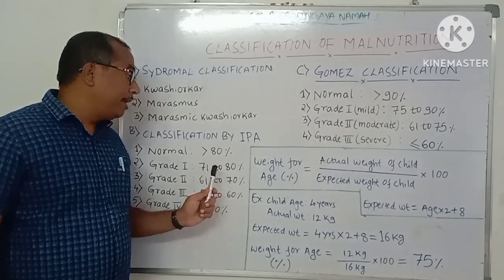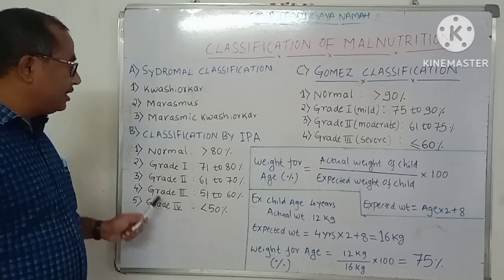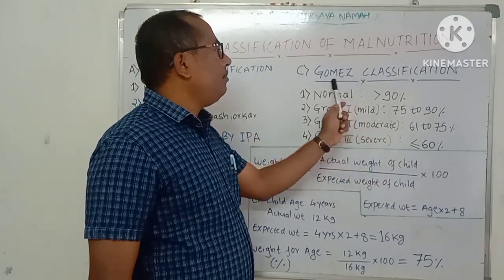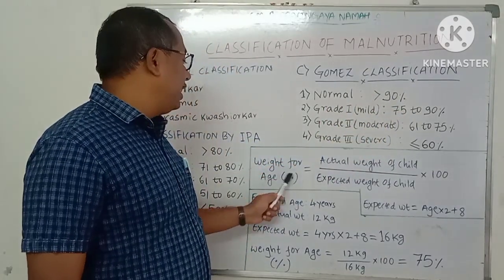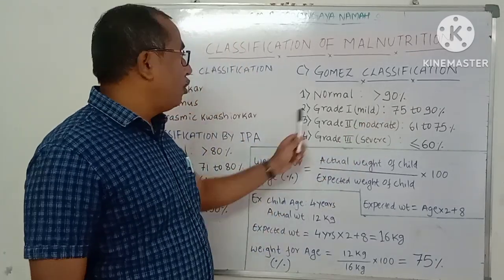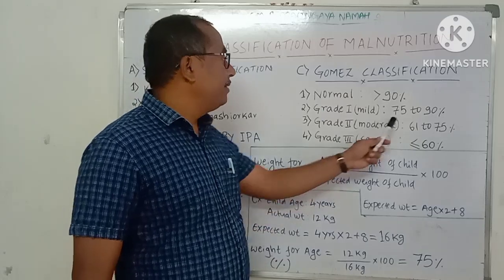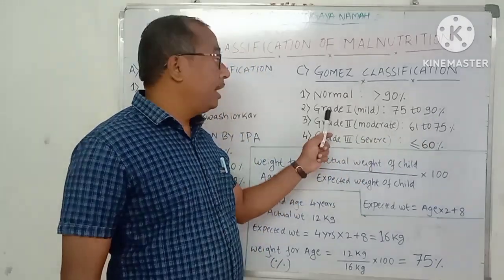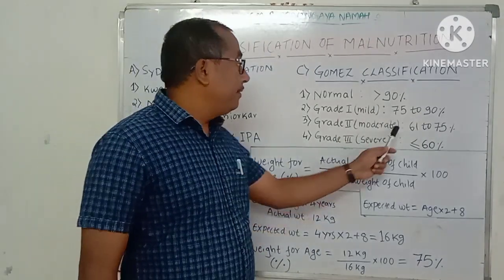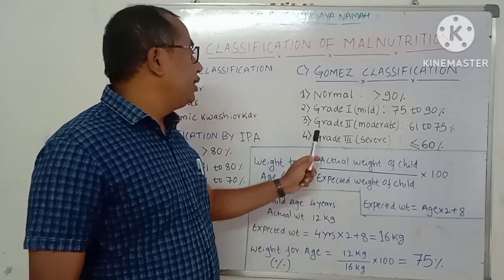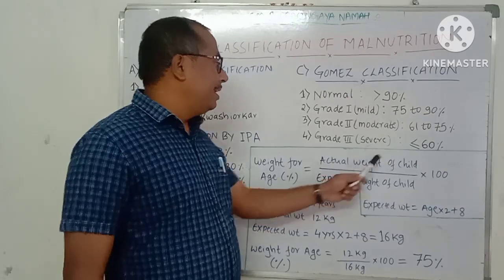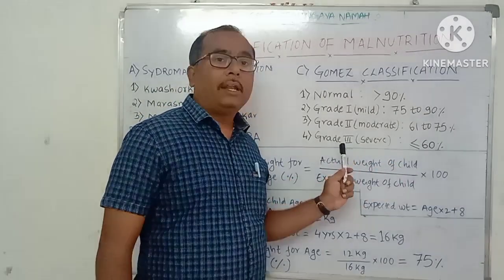How to calculate weight for age percentage will be discussed shortly. The next classification is Gomez classification, which also considers weight for age percentage. If weight for age is more than 90%, it is Normal. Between 75 to 90% is Grade 1 or mild malnutrition. Between 61 to 75% is Grade 2 or moderate malnutrition. Less than 60% is Grade 3 or severe malnutrition.